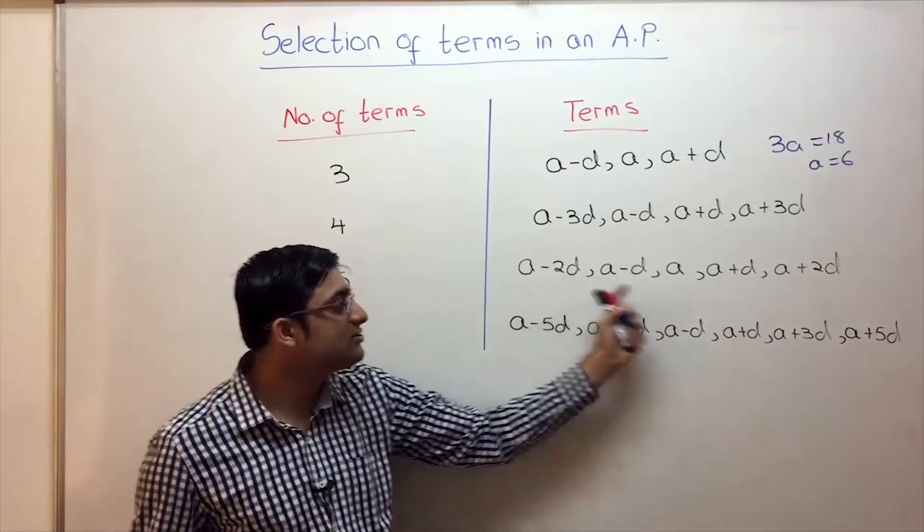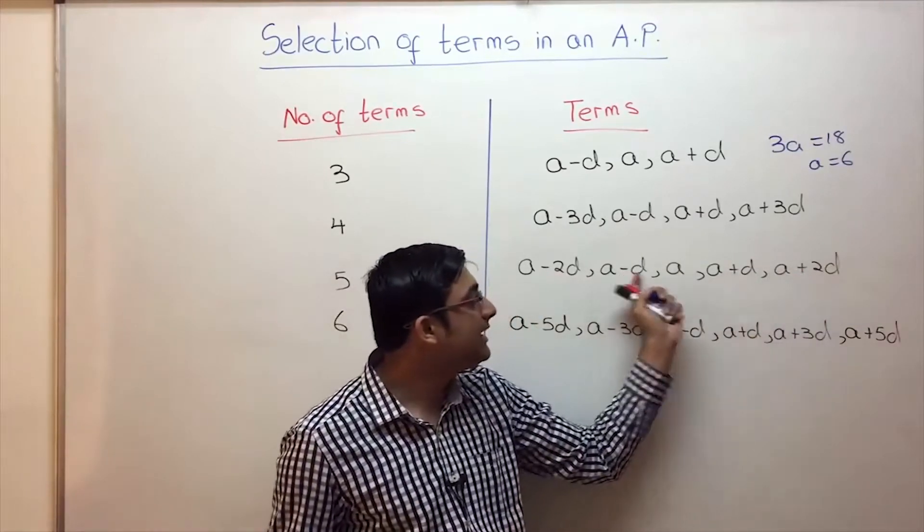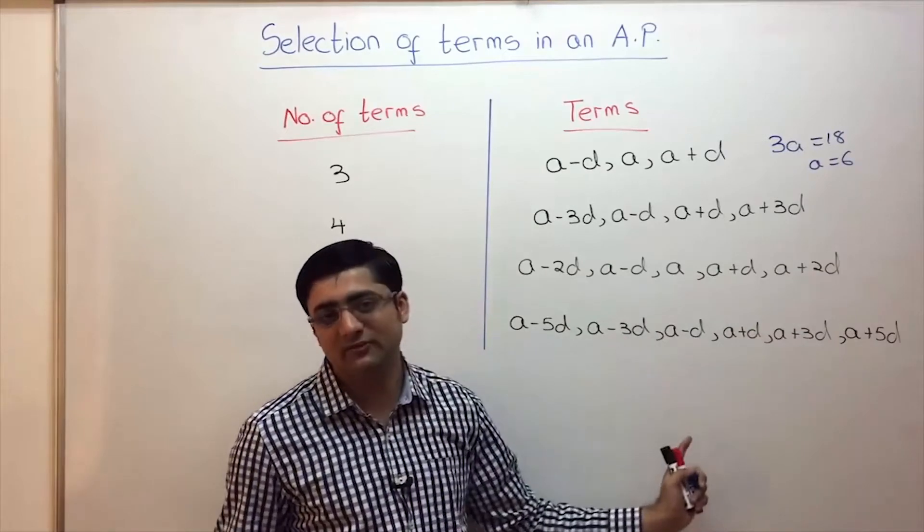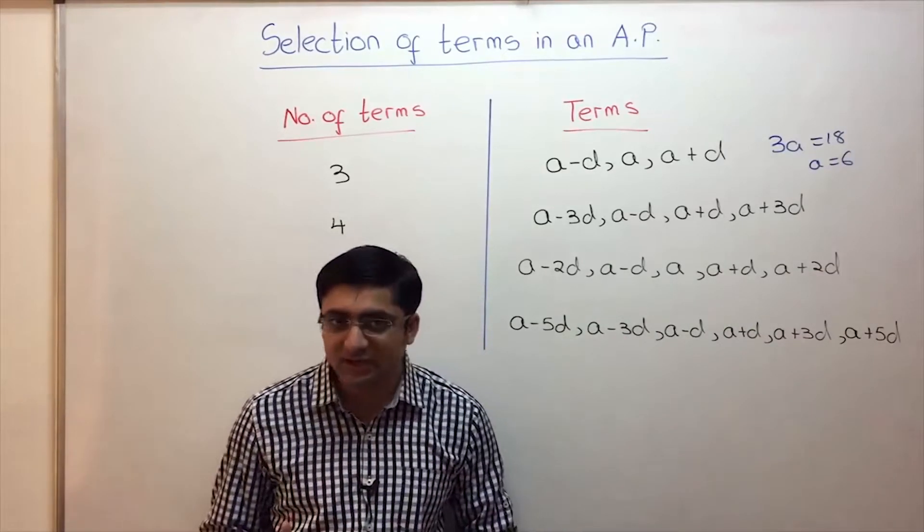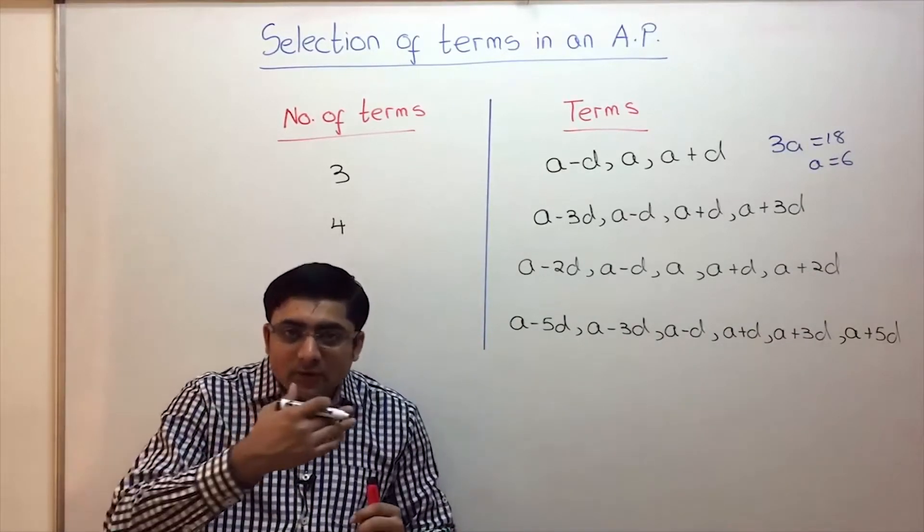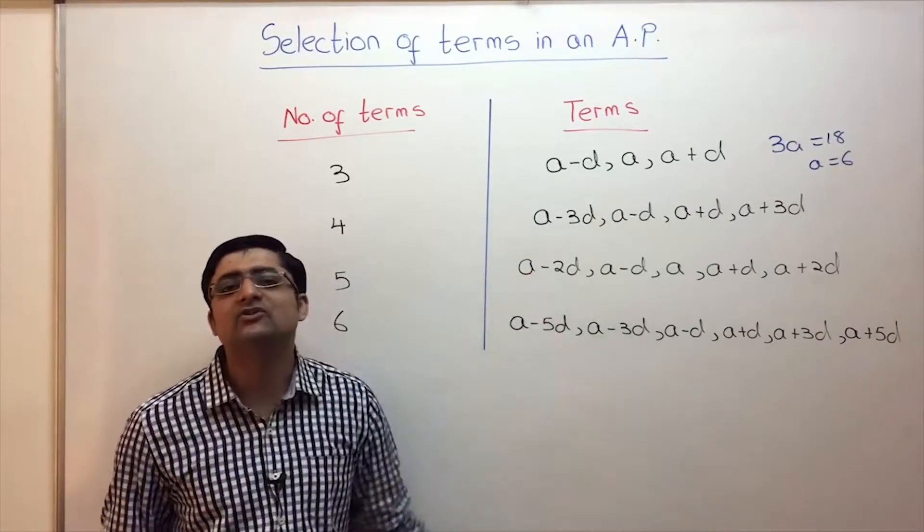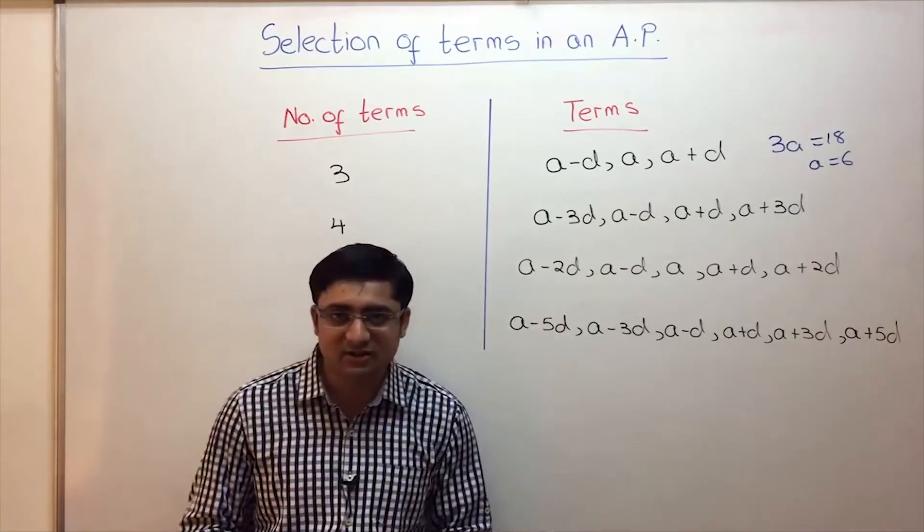Similarly add these terms: minus 2D plus 2D cancel, minus D plus D cancel. So sum of these terms is 5A. Same thing over here. So whenever you have to select terms in an AP, select them in such a way that when you add all of them the D variable cancels out. So you are left with only one variable A which you can immediately solve. That is the logic.